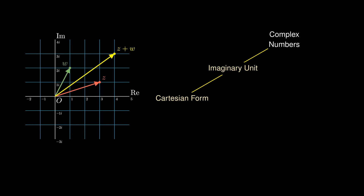Similar to vectors, the negative of a complex number can be represented by a point reflected about the origin. When we consider z - w, it is the same as z + (-w). The final landing point can therefore be seen as the complex number z - w.